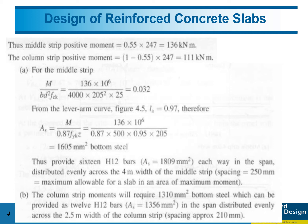We have k equals 0.032, and this value is less than 0.156, so we can consider z equal to 0.95d. By using this equation As = M/(0.87fyk·z), we can get As is 1605 mm².